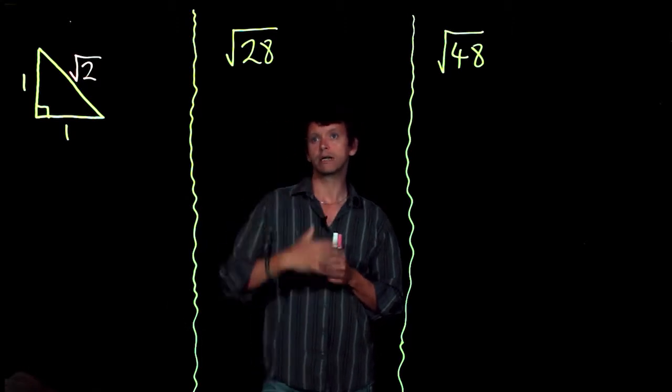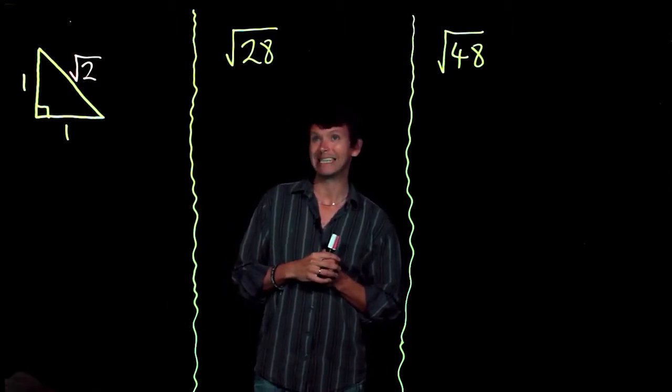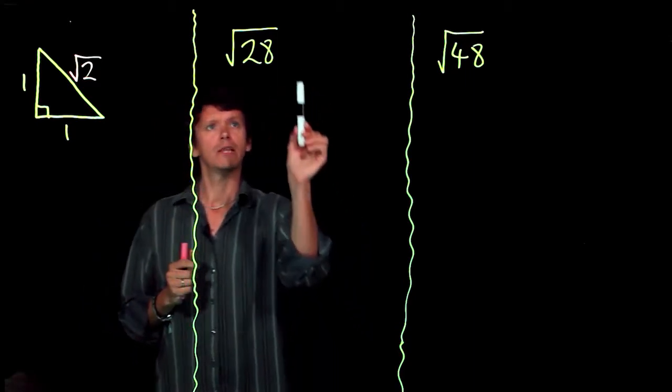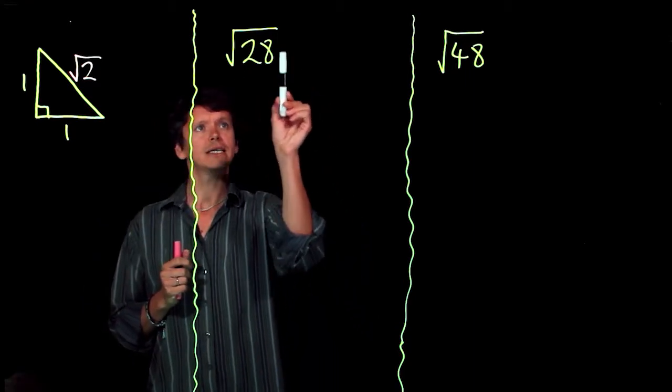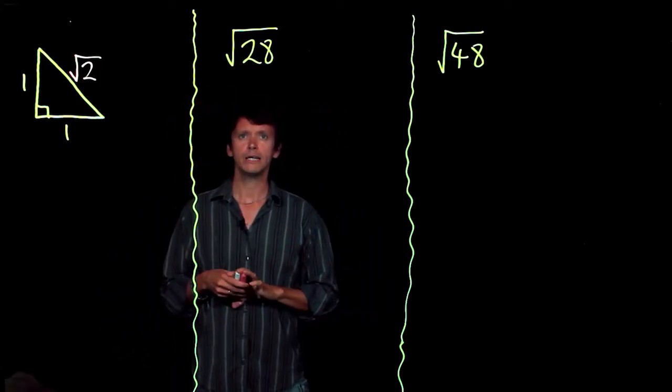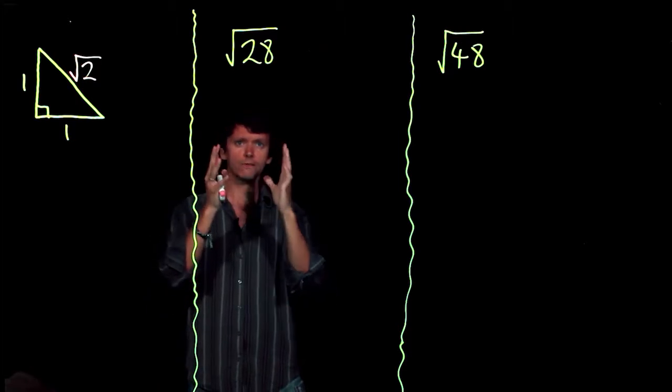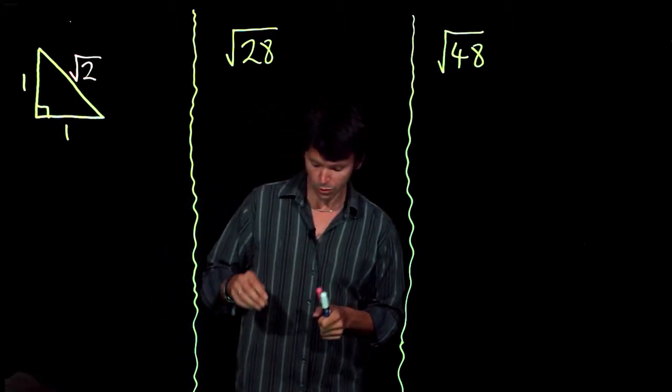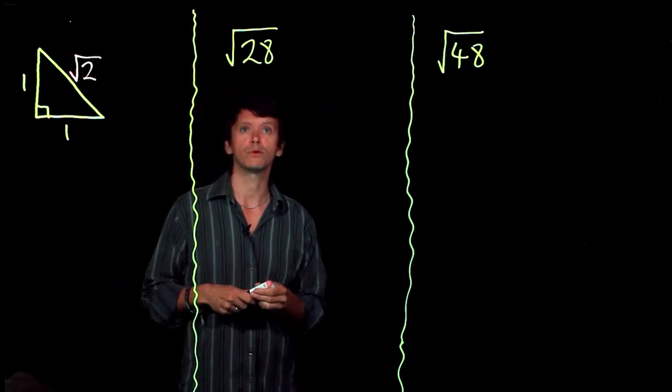Let's have a look at this number here, the root of 28. There's a convention with surds, and that is that the number you write inside the square root sign should be as small as possible. So we need to find a way to rewrite the square root of 28 so that the number that we're square rooting is as small as possible.